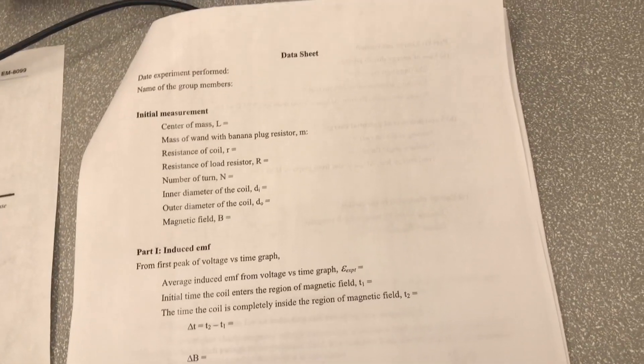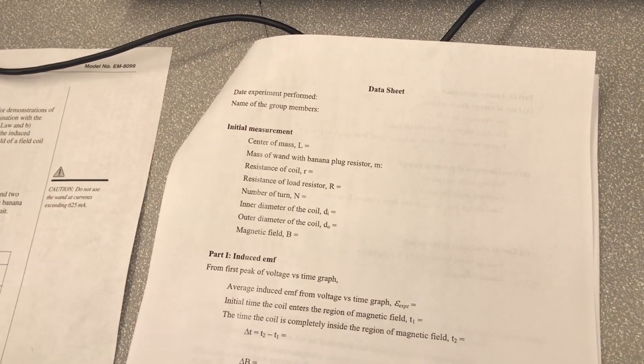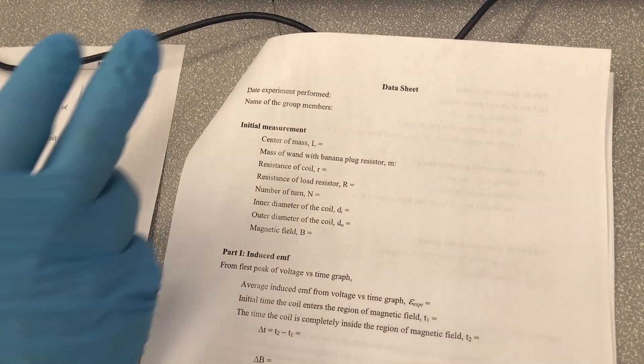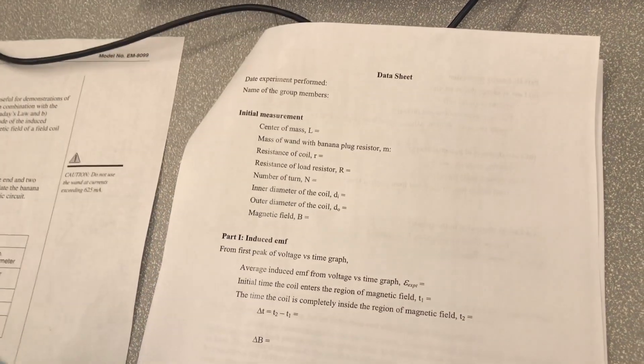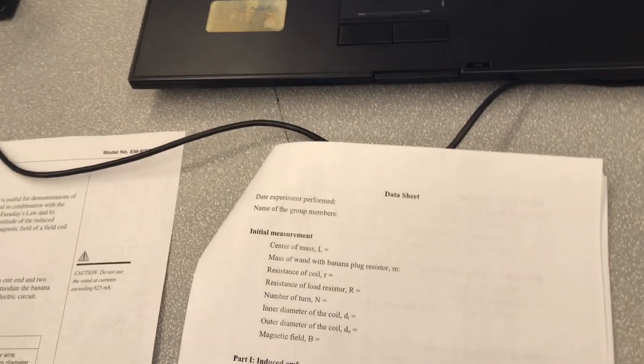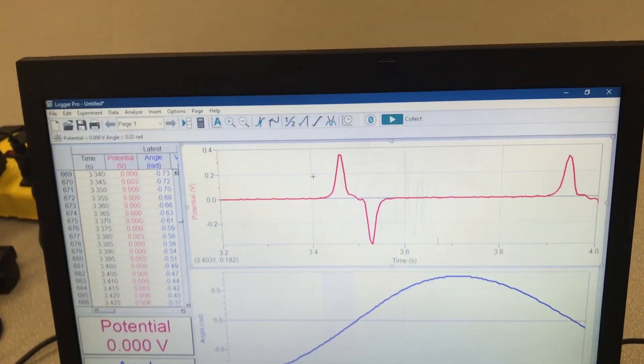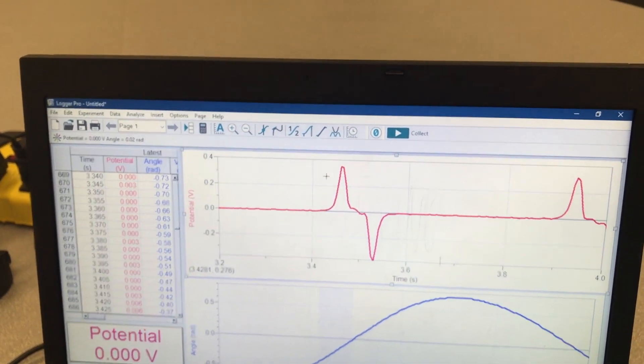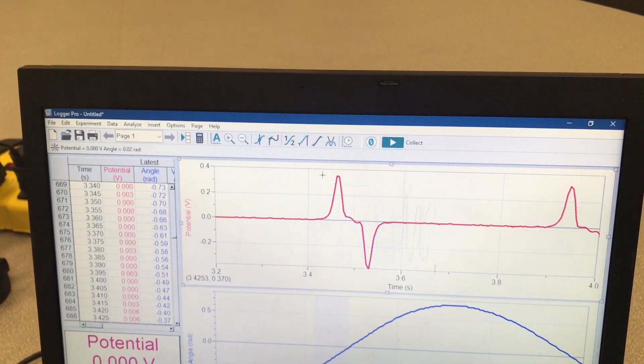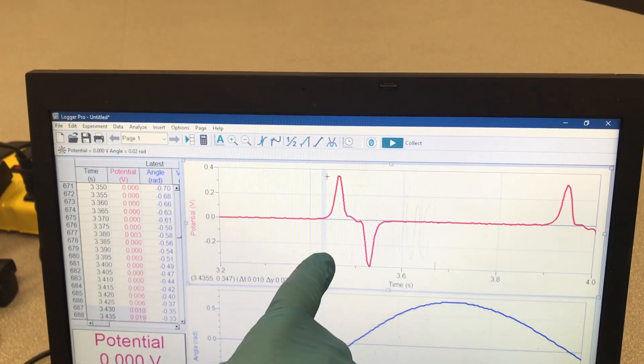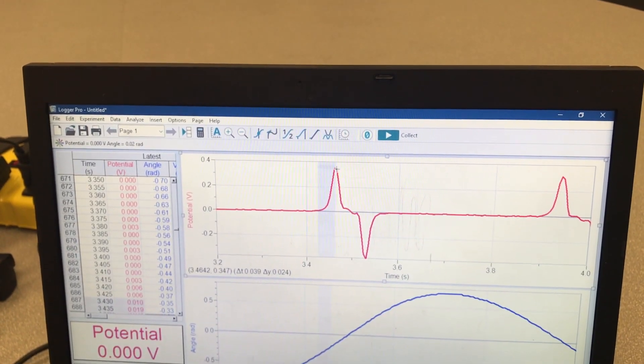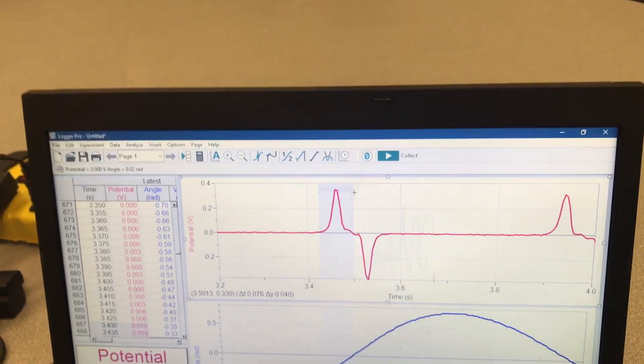So with all that in mind, we're able to use the equation we learned in class to figure out what is the induced EMF here. And then we're going to compare that to what we've measured. So we've got a theoretical value and a measured value that we can then compare. So in order to get our measured value, what we're going to need to do is go in here and highlight from where we first begin to enter the field to where the wand is completely in the field.